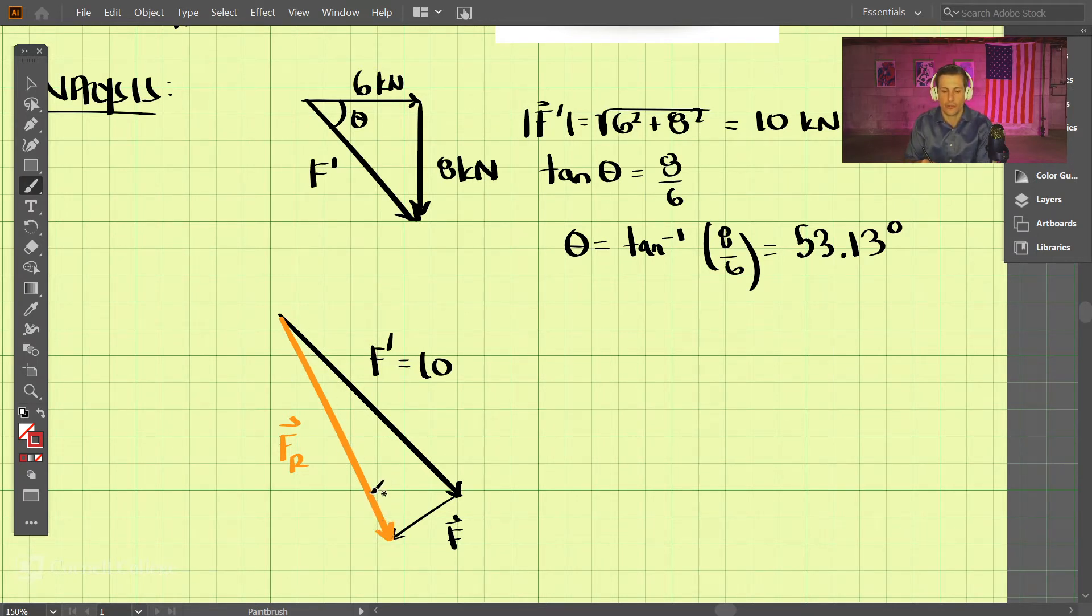Well, the trick really, the trick of this problem, is to realize when is FR the smallest. FR is the smallest when F and FR meet at a 90 degree angle. If it's less than 90 degrees, FR starts growing longer; as it comes to 90 degrees, it gets the shortest possible.